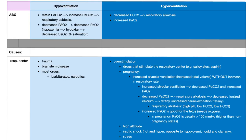Causes of respiratory acidosis and alkalosis are the same as causes of hypoventilation and hyperventilation. Hypoventilation leads to CO2 retention and respiratory acidosis; hyperventilation does the opposite — respiratory alkalosis. Causes involving the respiratory center: hypoventilation can result from trauma, brainstem disease, and most drugs such as barbiturates and narcotics — but not aspirin, because salicylate actually stimulates the respiratory center. Causes of hyperventilation at the respiratory center include overstimulation by drugs such as salicylate, pregnancy, high altitude, septic shock, and stress.